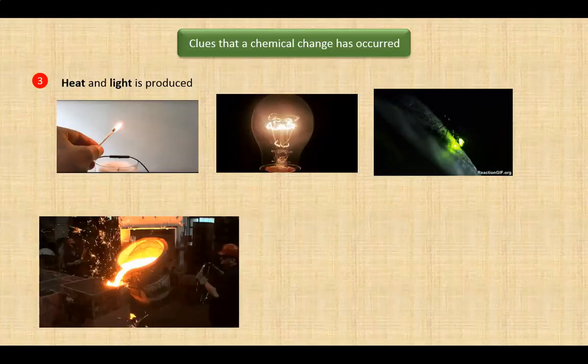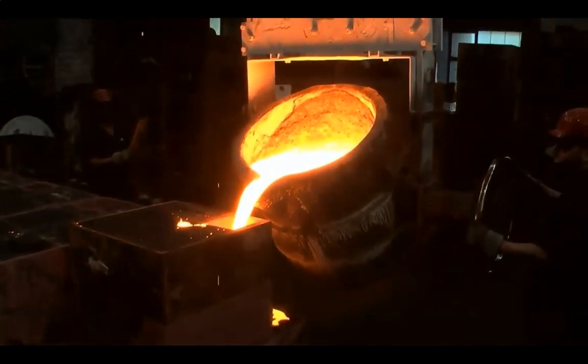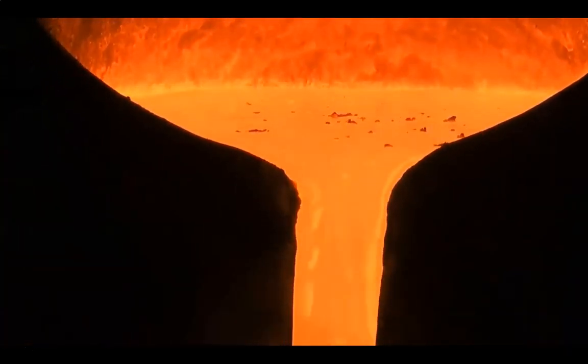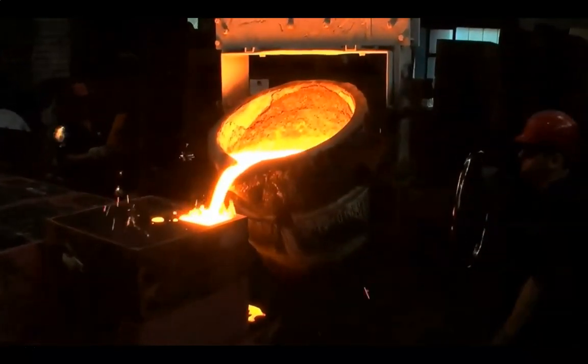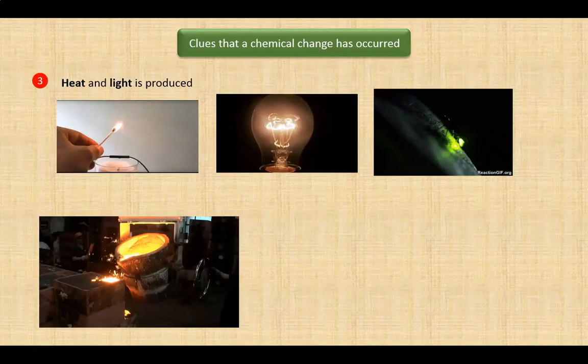Here is a case in which much heat and light are produced. Chemical change? You may recognize what is happening here. A molten metal is being poured into a mold where it will cool down and solidify into the solid form. So this is a change in state in which no new substances form and again is a physical change, not a chemical change.